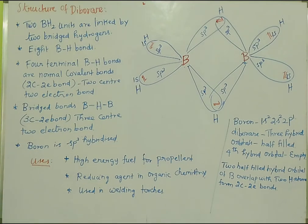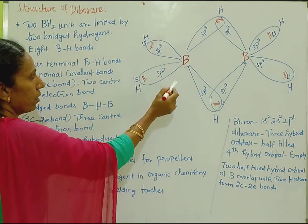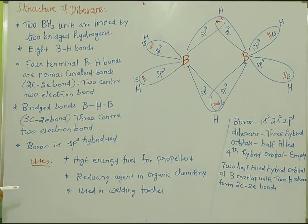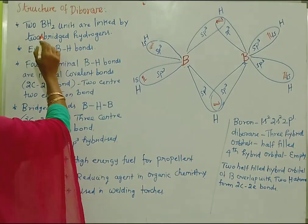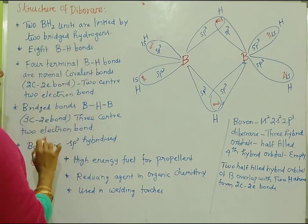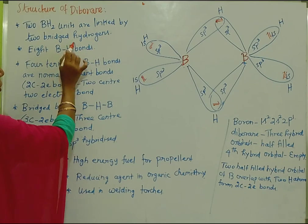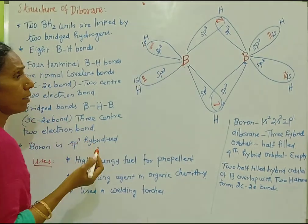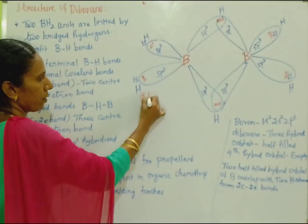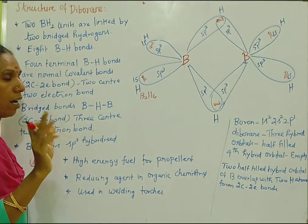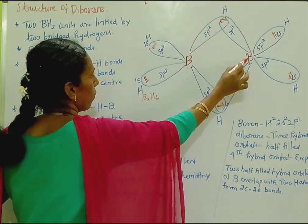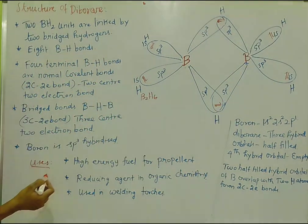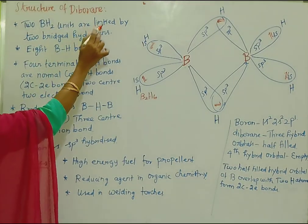So let's look at the structure of diborane. It has two boron atoms and six hydrogen atoms — so the formula is B2H6. Counting the hydrogens: one, two, three, four, five, six. This is six hydrogen atoms.